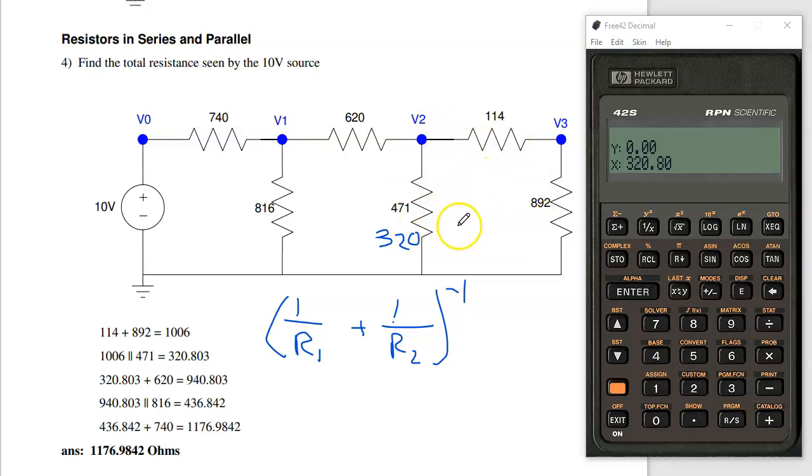Meaning all these together are 320 ohms in series with 620. Again, this current, that resistance, and all these together are in series. So I add 620. 940 ohms. That's in parallel with 816. In parallel, it adds as the inverses. So take that inverse. 816. Inverse. Add them. This is 436 ohms in series with 740. So there's the answer. The total current is 1176 ohms. That's problem 4.